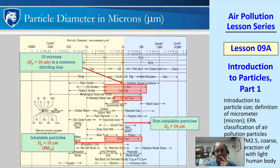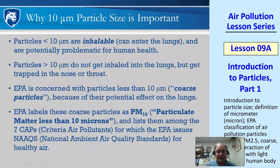Particles bigger than 10 microns don't get into your lungs, whereas inhalable particles are less than 10 microns. The EPA is concerned about those — they call them PM10, particulate matter less than 10 microns. Particles less than 10 microns are inhalable; particles greater than 10 microns are not. PM10 particles are among the seven criteria air pollutants, for which the EPA has National Ambient Air Quality Standards (NAAQS).